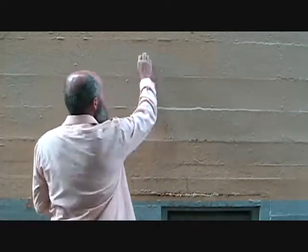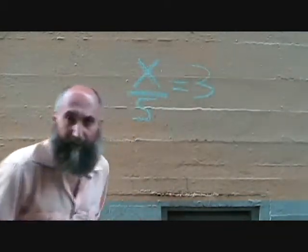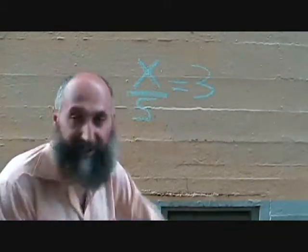So you should have guessed by now, if we want to get rid of a multiplication, we do division, so if we want to get rid of a division, we do multiplication. So let's say we have x divided by 5 is equal to 3.